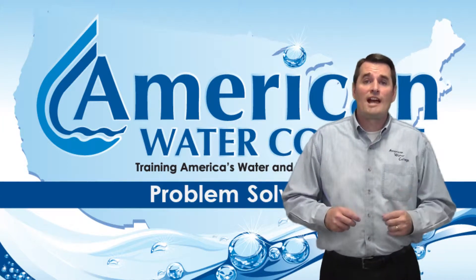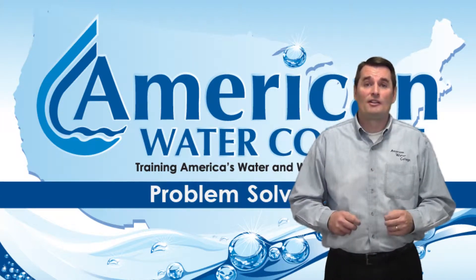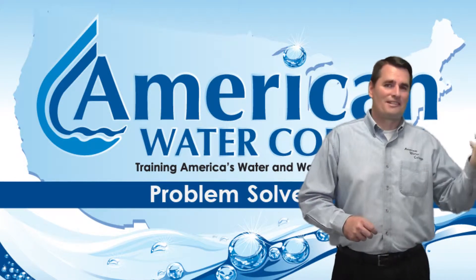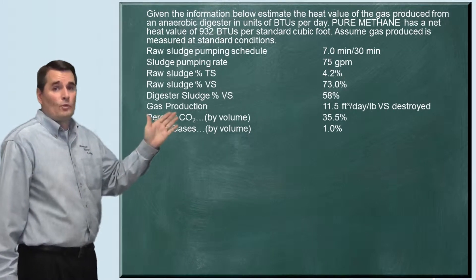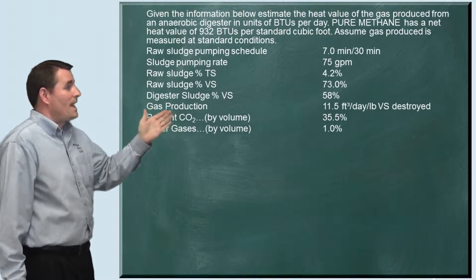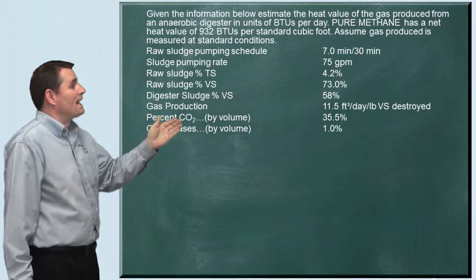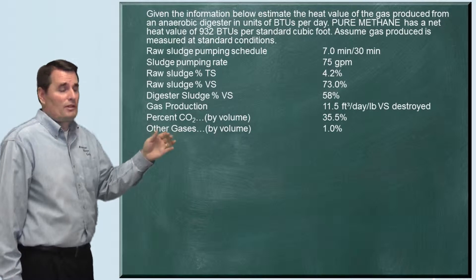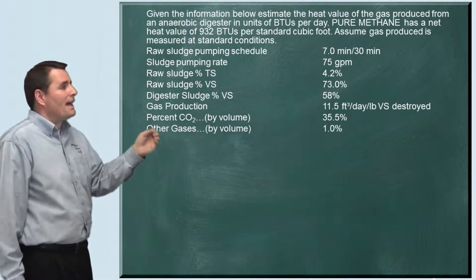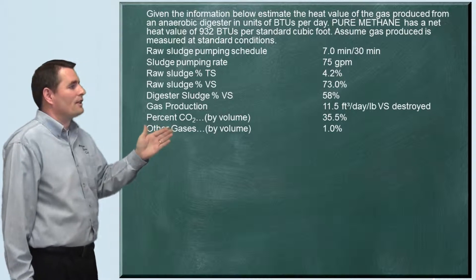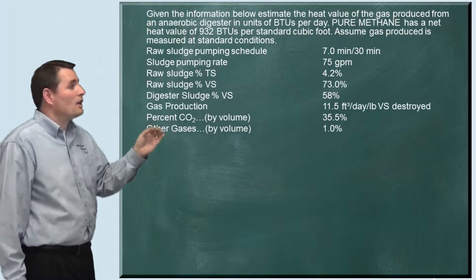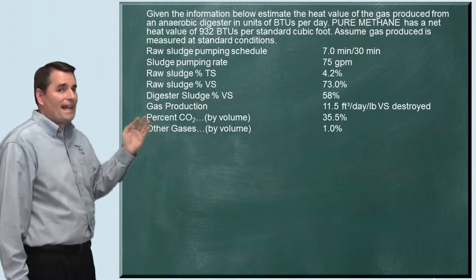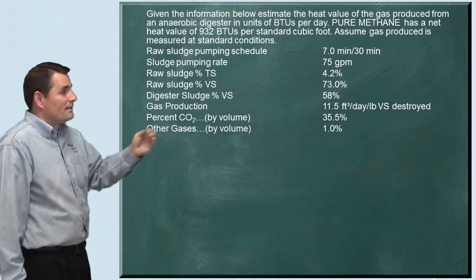In this problem we're going to learn how to estimate the heat value from gas produced in an anaerobic digester. The problem reads: given the information below, estimate the heat value of the gas produced from an anaerobic digester in units of British thermal units per day. Pure methane has a net heat value of 932 BTU per standard cubic foot. Assume the gas produced is measured at standard conditions.